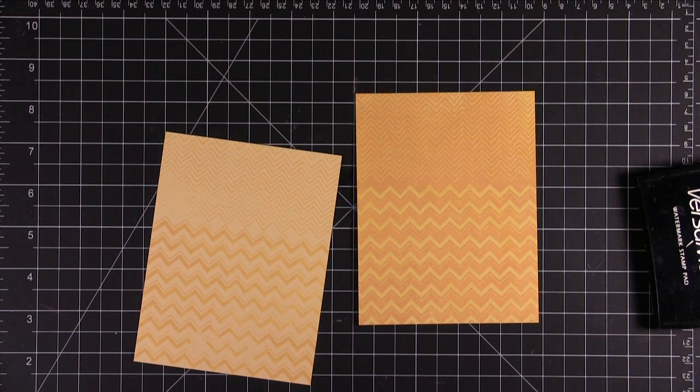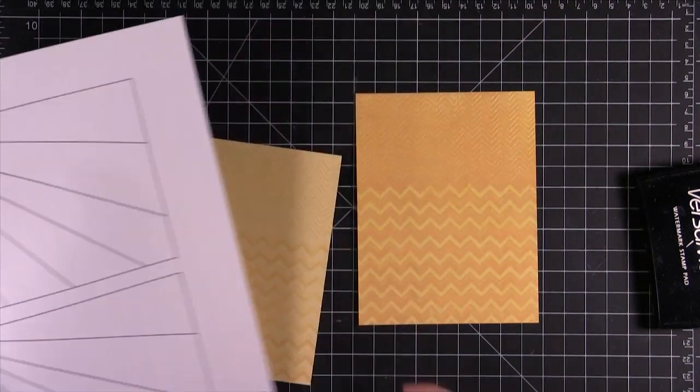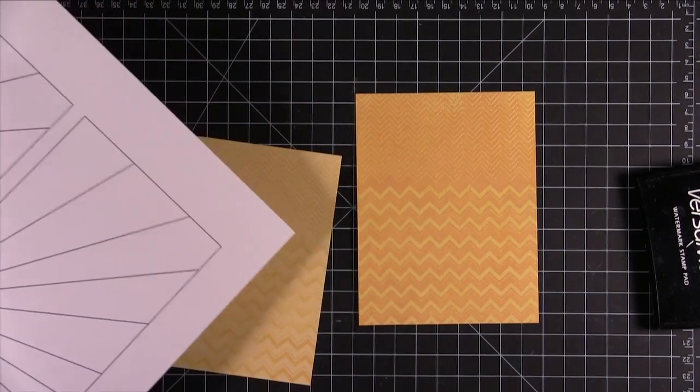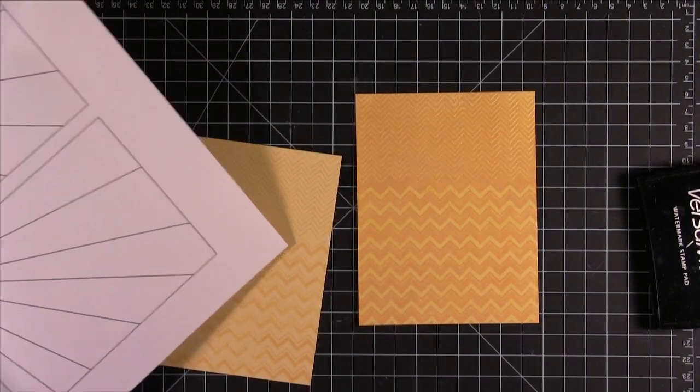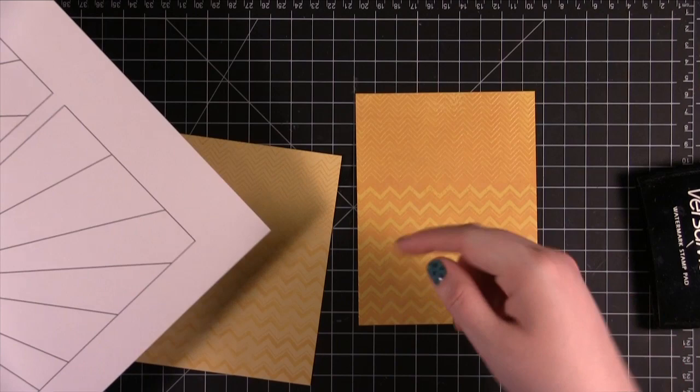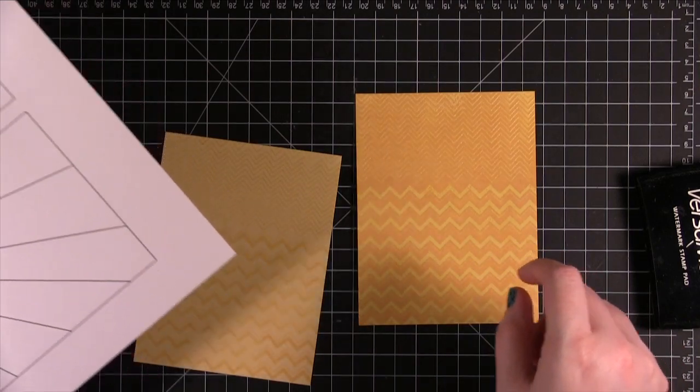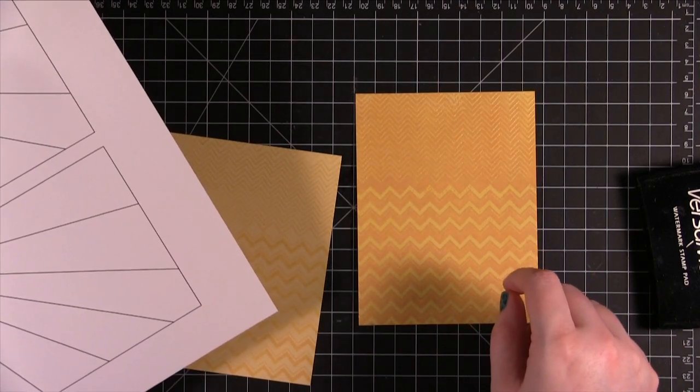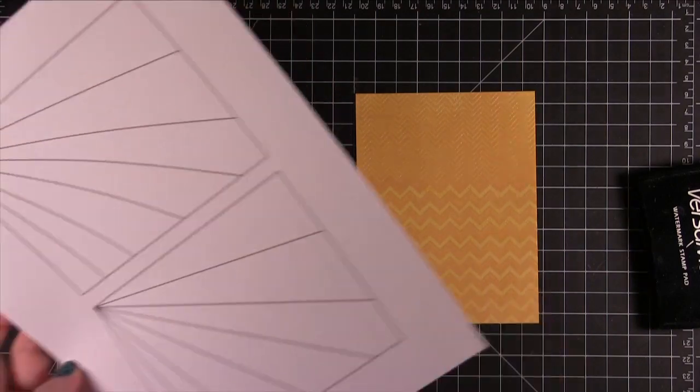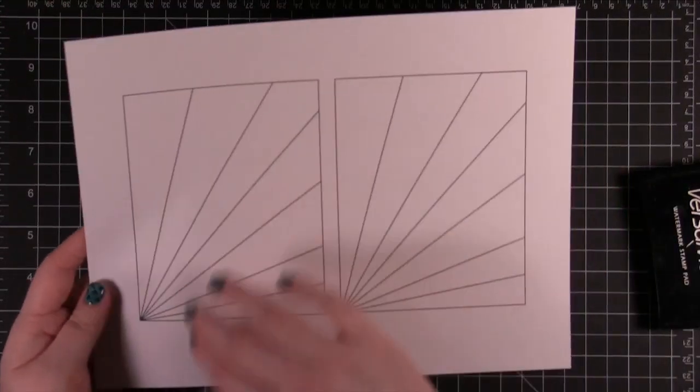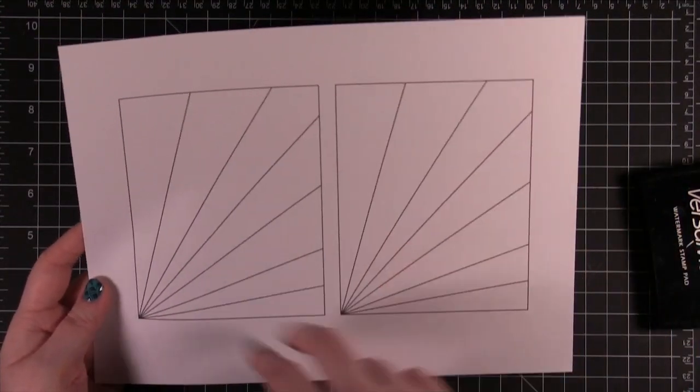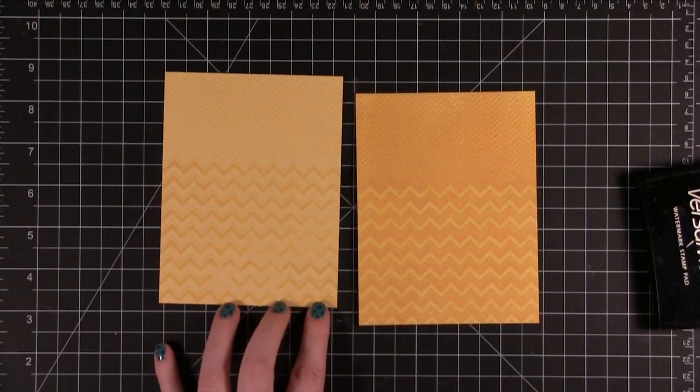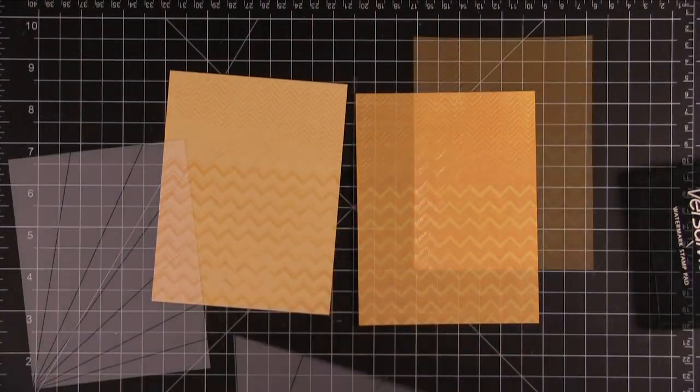All right, so here's a template that I made on my computer. It's included with today's blog post if you want to download it. So if you're at YouTube, you're going to want to go down to the info bar below and there will be a link to go to today's blog post over at the Simon Says Stamp blog and then you can download this template. So it's going to have a ray template and I'm going to cut out both of these and use them as a template to cut out the pieces.